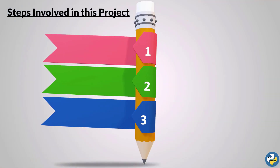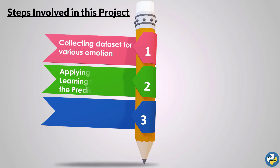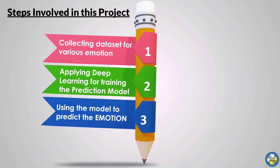There are total three steps involved in this project. First, collecting a dataset for various emotions. In the second step, we are going to apply deep learning for training the prediction model. And in the third step, we are going to use the trained model to predict the emotion from the person's face.